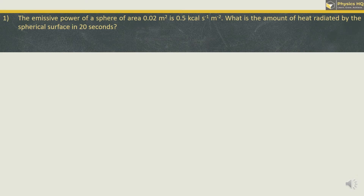The emissive power of a sphere of area 0.02 m² is 0.5. What is the amount of heat radiated by this spherical surface in 20 seconds? So we have time as 20 seconds, area as 0.02, and the emissive power, which is denoted by R, as 0.5.